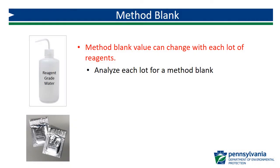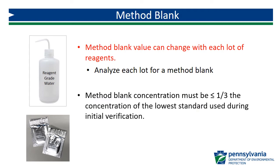The interference caused by the DPD can vary from lot to lot. It is recommended that each new lot of reagent be analyzed for a method blank to determine the impact on measured chlorine concentration. The method blank concentration must be less than or equal to one-third of the concentration of the lowest standard used to initially verify the calibration curve. The initial verification procedure is discussed in detail in a separate video.